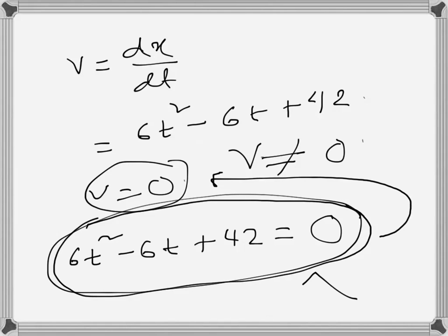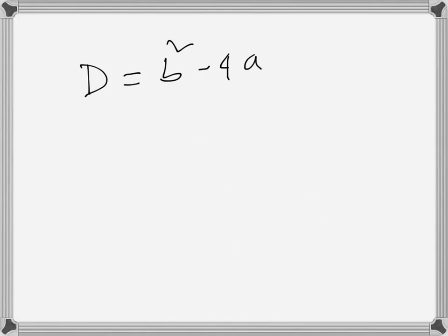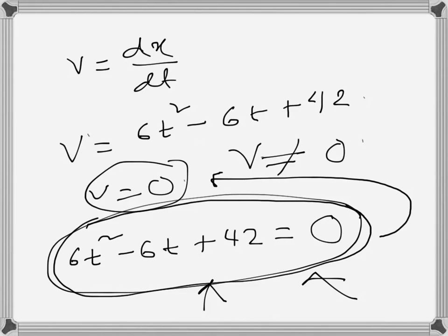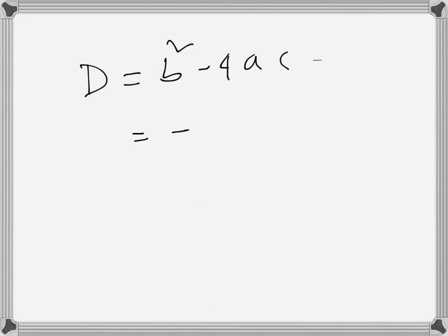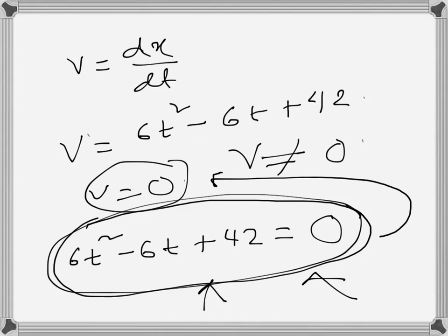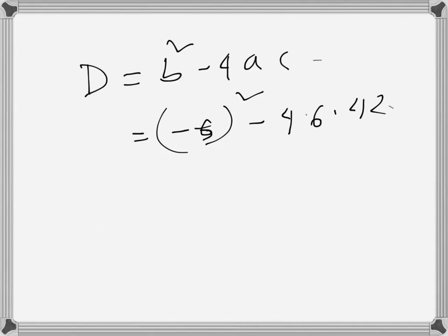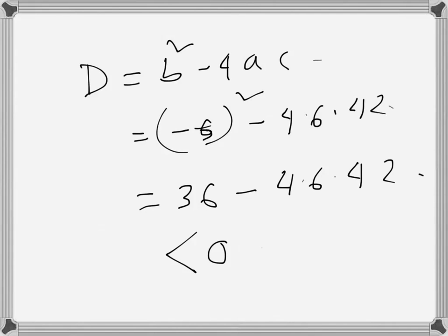Let's look at the discriminant of this velocity equation and see whether it is less than 0. If less than 0, that means the equation has no real root and the velocity is never 0. The discriminant D equals B² minus 4AC. Here B is minus 6, so (minus 6)² minus 4 times 6 times 42. This gives 36, and since the second term is much larger and negative, we can see this is less than 0.